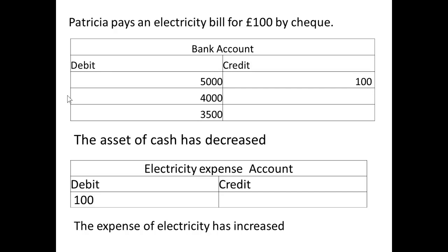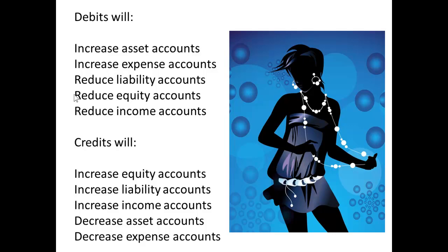To complete this idea, let's take an expense. She pays an electricity bill for £100 by cheque. We credit the bank account with £100 because the asset of cash has decreased. The expense of electricity has increased, so we debit the electricity account with £100. In summary: debits increase asset accounts and expense accounts, but debits reduce liability, equity and income accounts. Credits increase equity, liability and income, but decrease assets and expenses.